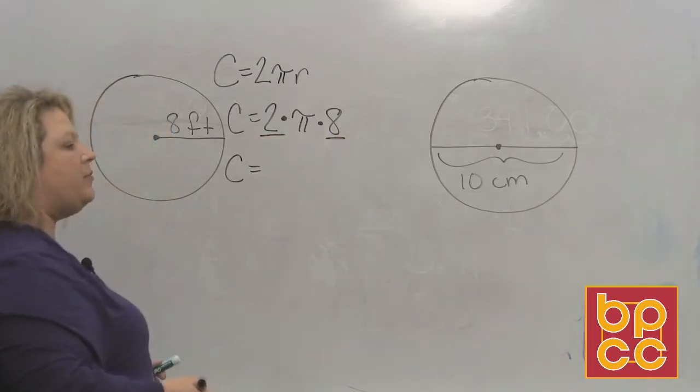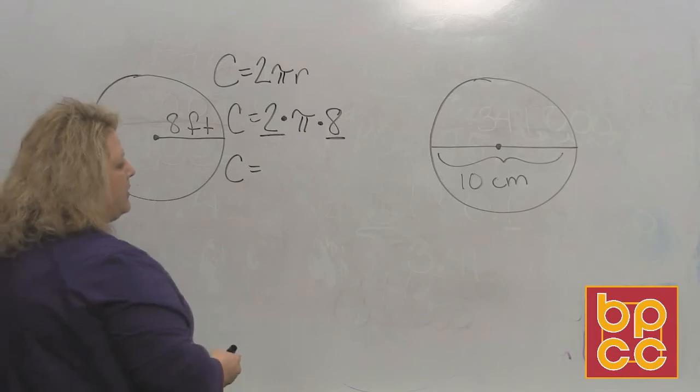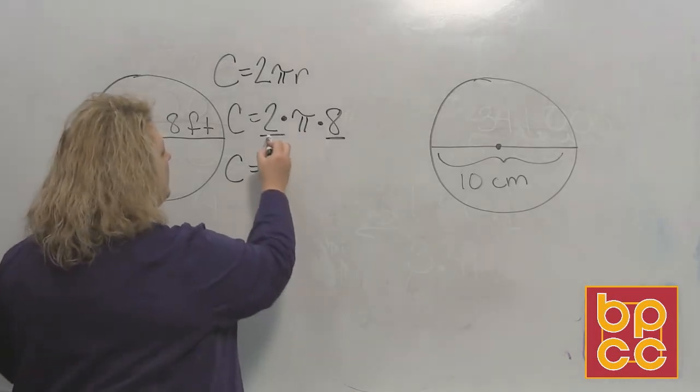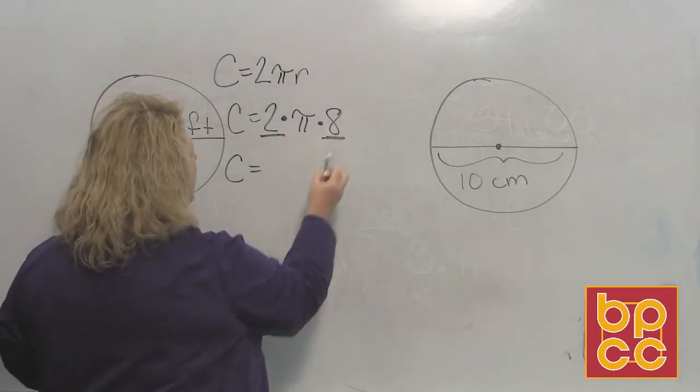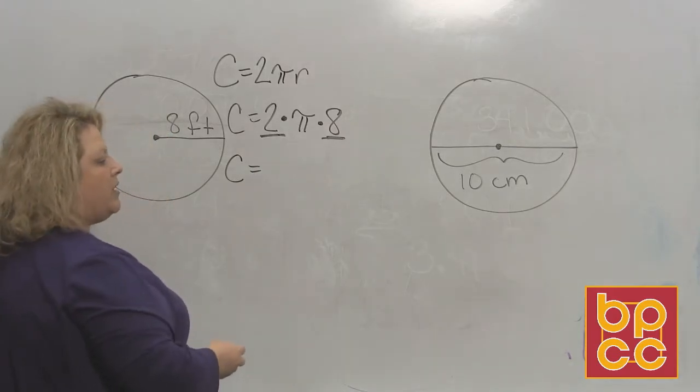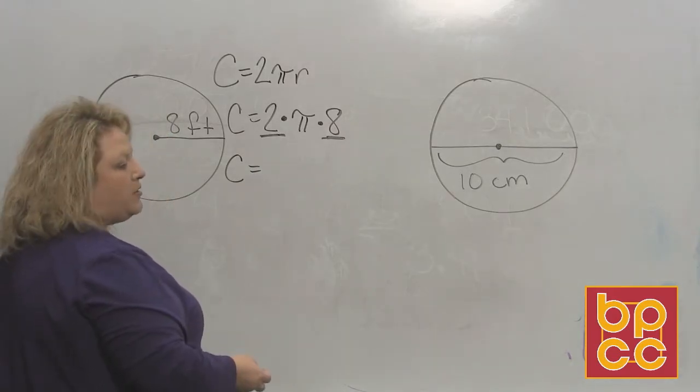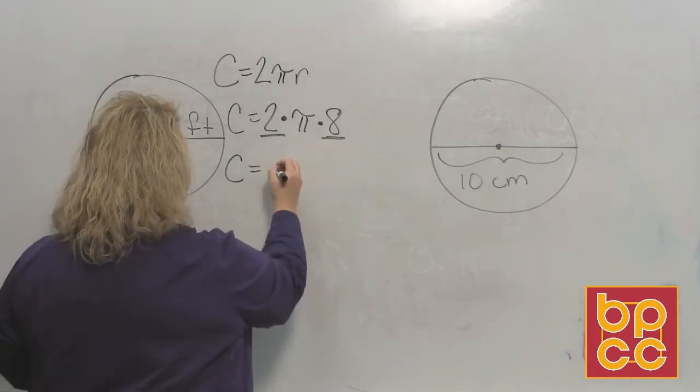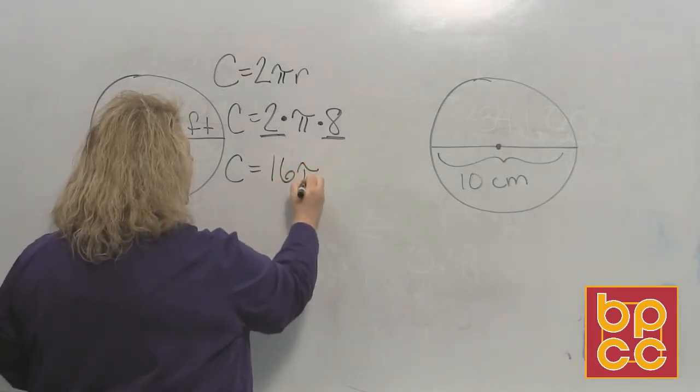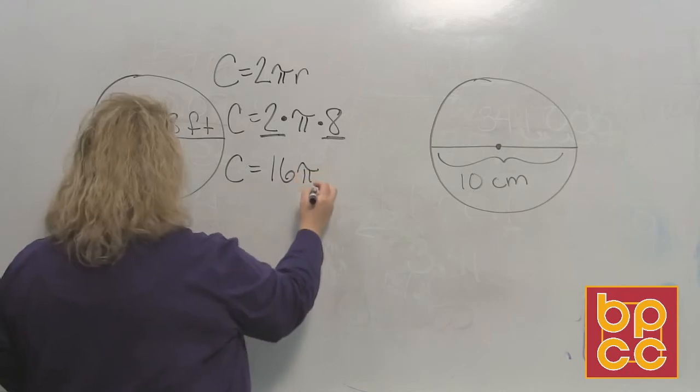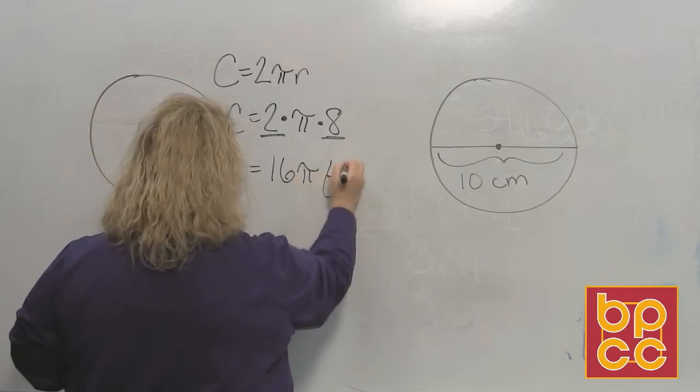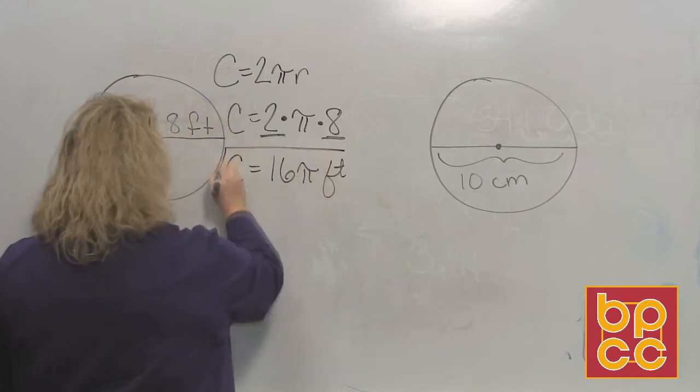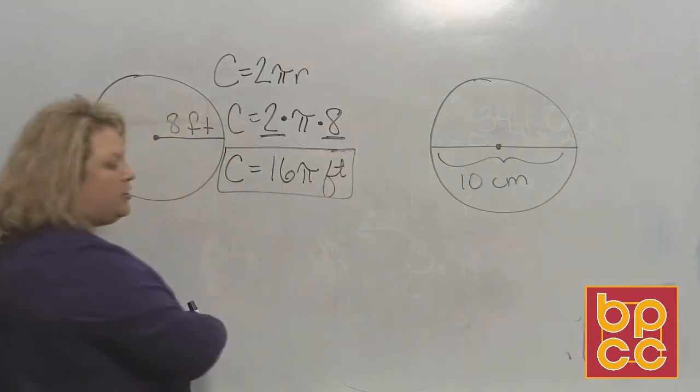Circumference is equal to 2 times 8. Now multiplication is commutative, we talked about those properties in a previous module. So the commutative property says that no matter what I do, I can rearrange the numbers and multiply them together, and I'm still going to get the same answer. So 2 times 8 would be 16, and then the pi symbol. So 16 pi in circumference, that would be feet. This is the exact answer that you would get.